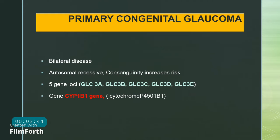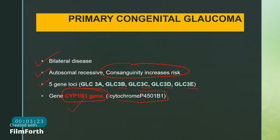Primary congenital glaucoma usually affects both eyes, making it a bilateral disease. It is autosomal recessive, so consanguinity increases the risk of a child developing it. Five gene loci are identified: GLC3A, 3B, 3C, 3D, and 3E. The most common associated gene is CYP1B1, related to cytochrome P450 1B1, which is involved in metabolic activities and migration of neural crest cells during development of the trabecular meshwork and angle.